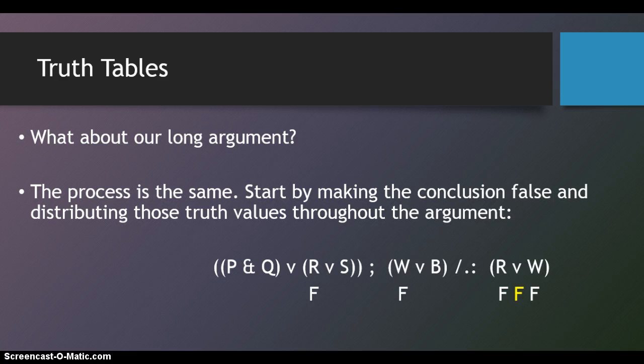And then we distribute those truth values back into the premises. Wherever we find R, we make R false. Wherever we find W, we make W false.